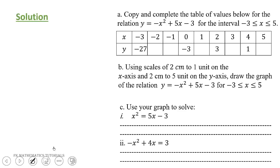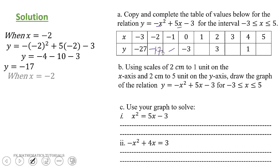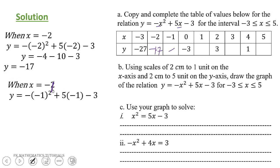We need to fill in these values. When x equals -2, we substitute -2 wherever we see x in the relation. That gives us -4 - 10 - 3, which is -17, so we write -17. When x equals -1, we get -(-1)² + 5(-1) - 3, which simplifies to give us -9, so we write -9 here.